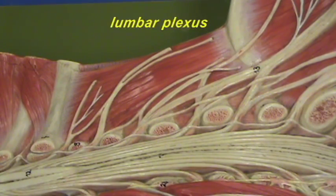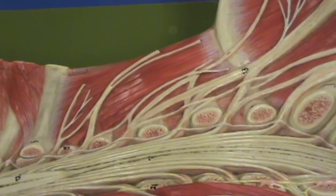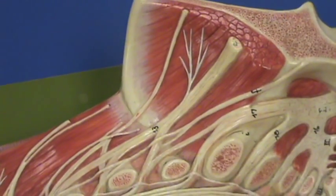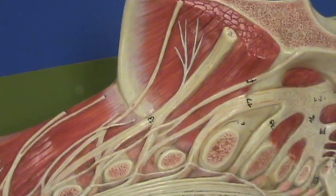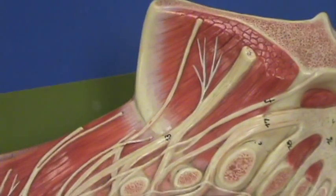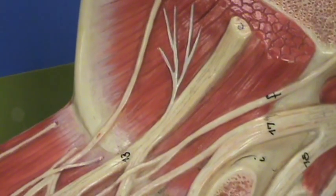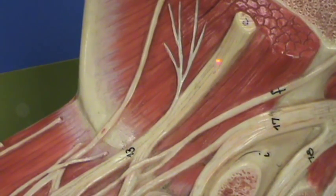Quite a few nerves are going to originate from this plexus. Let's just note one right over here — this is the femoral nerve.